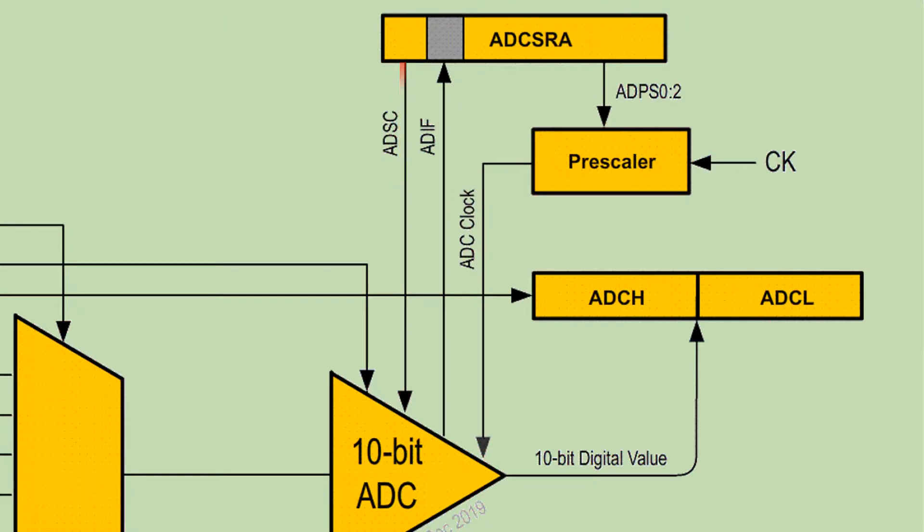This signal starts the conversion. When the conversion is completed, a bit in this register is updated to indicate that conversion has completed. The 10-bit data is then stored in the ADCH and ADCL registers.